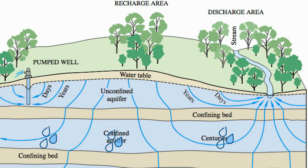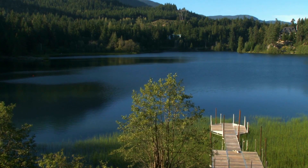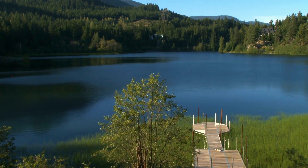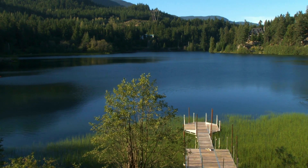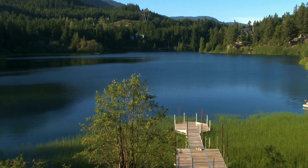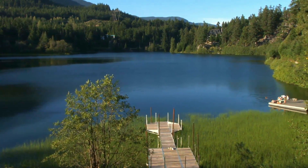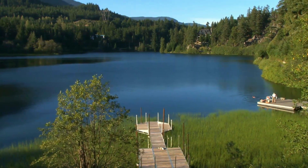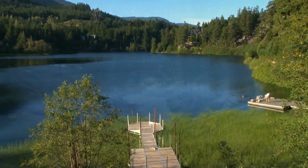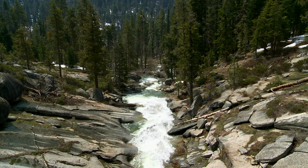However, not all of the groundwater stays underground. Much of the surface water comes from groundwater and aquifers. If the ground dips below the water table, the groundwater will flow to the surface and may create a body of surface water, like a lake. Groundwater can also flow out and create a stream. This is called a spring.